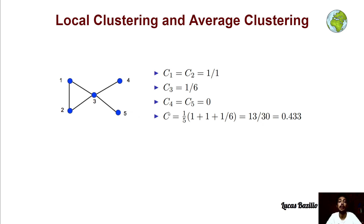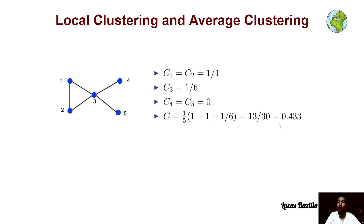Now we can compute the average local clustering. Since we have 5 nodes in total, we sum all of the local clustering values for each node and divide by 5. For nodes 4 and 5, the local clustering is 0, so they don't contribute to the summation. This gives us 13 divided by 30, which is approximately 0.43.